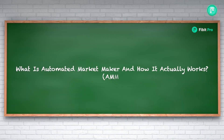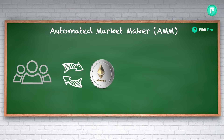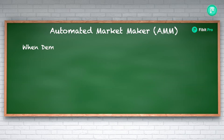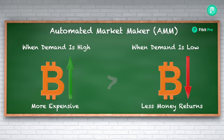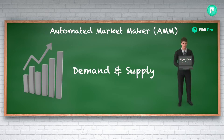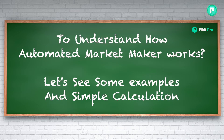What is an automated market maker and how does it actually work? An automated market maker allows traders to buy and sell specific coins based on an algorithm that determines how much something should cost based on its availability. When demand is high it becomes more expensive, and if you sell a large number of coins you will receive less money. It's all about demand and supply, but this time an algorithm is used instead of a person. To properly understand how an automated market maker works, we must first go through some examples and simple calculations.